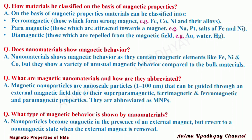Second, paramagnetic — these are the substances or materials which are attracted towards a magnet. Examples are sodium, platinum, and salts of iron and nickel. Third, diamagnetic — these are the substances which are repelled from the magnetic field. Examples are gold, water, and mercury.